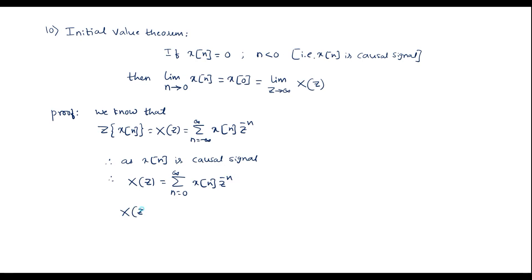In this summation, for n equal to 0 we get x of 0 times z to the power minus 0, plus for n equal to 1 it will be x of 1 times z to the power minus 1, plus for n equal to 2 it will be x of 2 times z to the power minus 2, and so on.